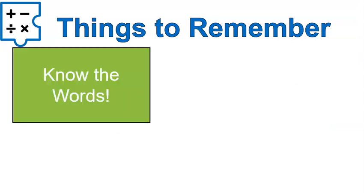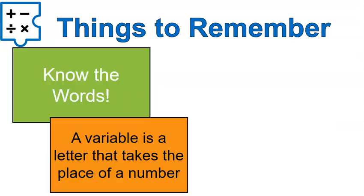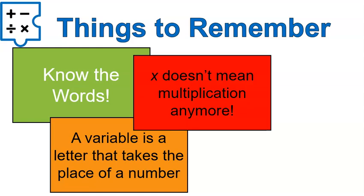All right. A couple of things to remember. Know the words. Remember what the words mean. And then a variable is just a letter that takes the place of a number. So moving forward, X will not mean multiplication anymore. It will mean an unknown value. So make sure that you take note of that. I hope that this video lesson was helpful for you. Have a wonderful day.